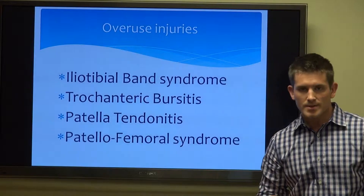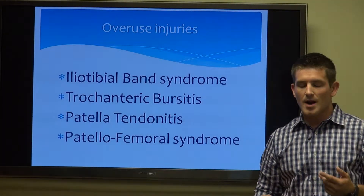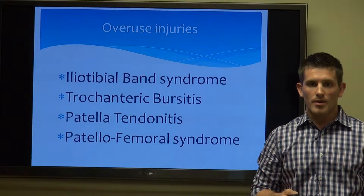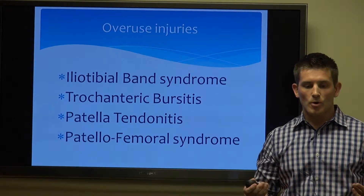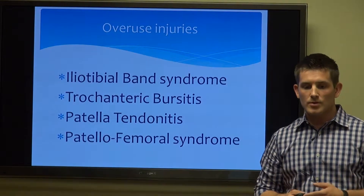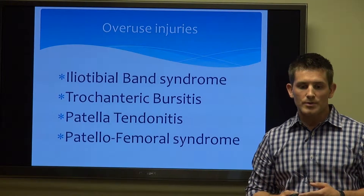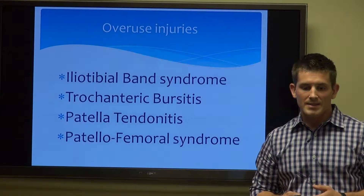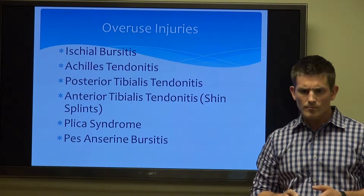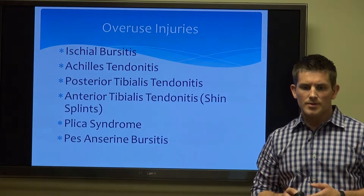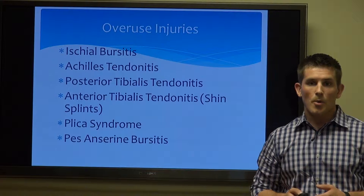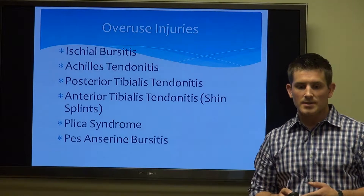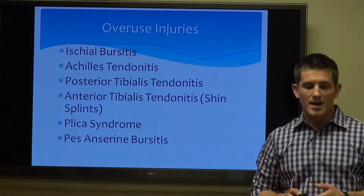First we'll talk about overuse injuries. The overuse and structural injuries — we can have a combination of both, and obviously multiple things going on at any given time. Some common overuse injuries are IT band syndrome or the iliotibial band, trochanteric bursitis, patellar tendonitis, and patellofemoral syndrome. Some other common overuse injuries are ischial bursitis, Achilles tendonitis, posterior tibialis tendonitis, anterior tibialis tendonitis — also known as shin splints — plica syndromes that affect the knee, and pes anserine bursitis.